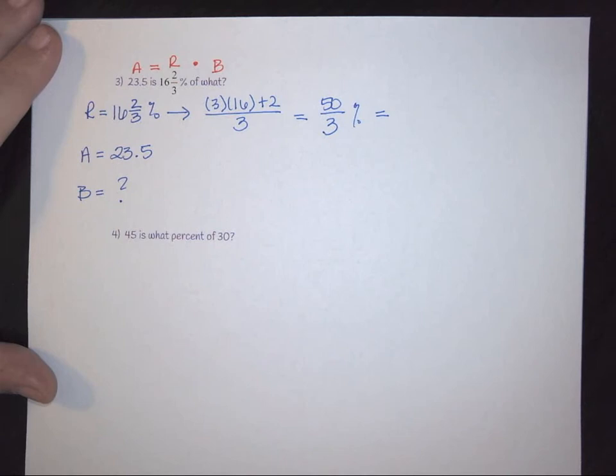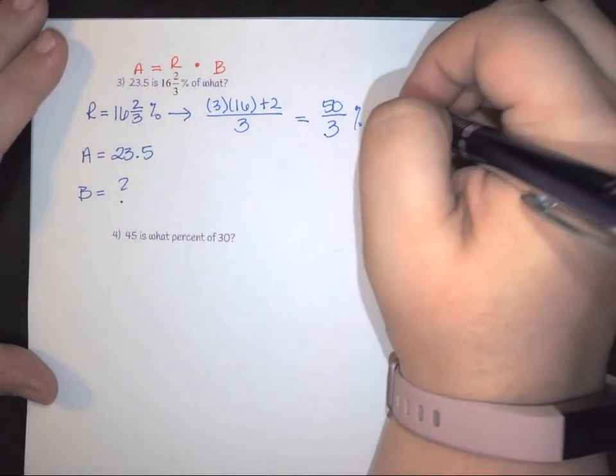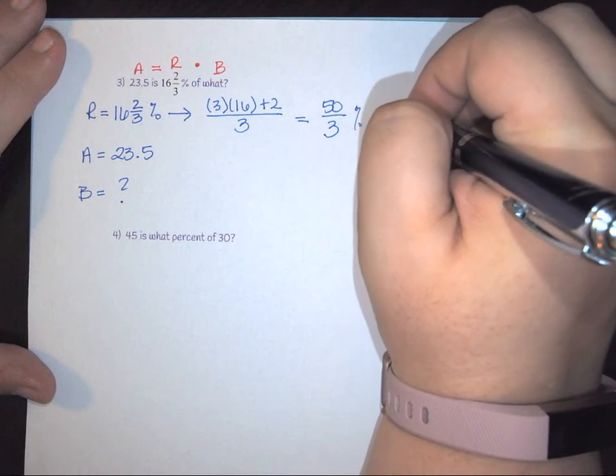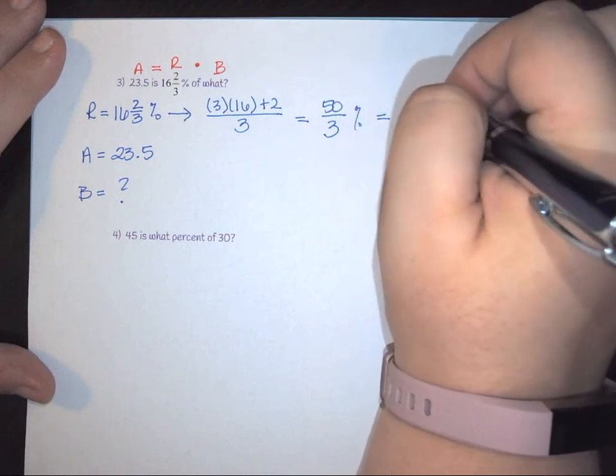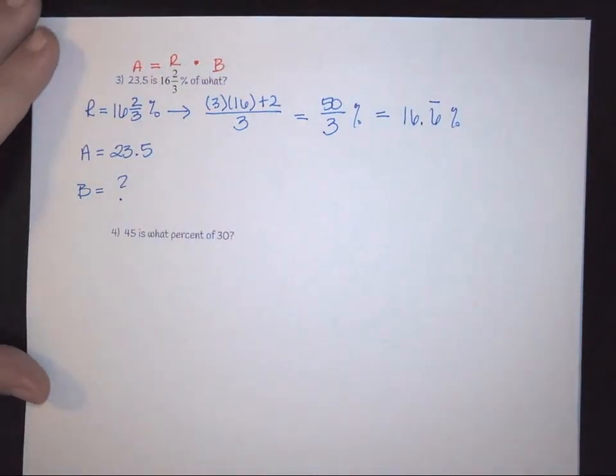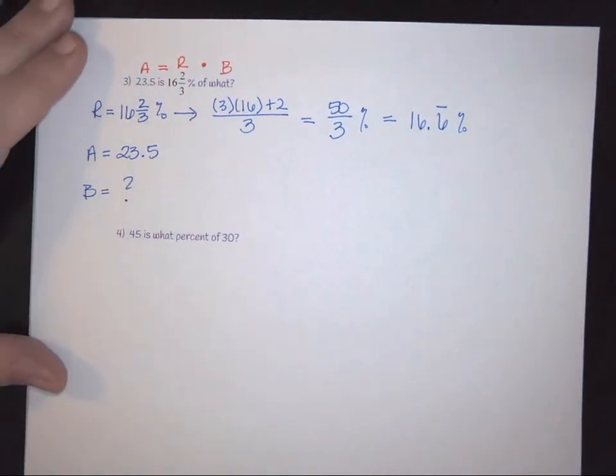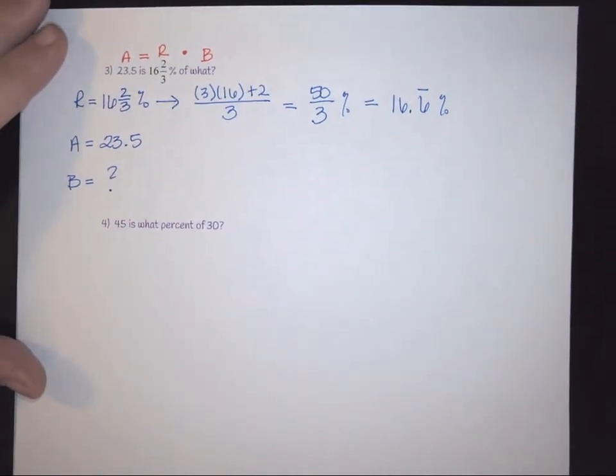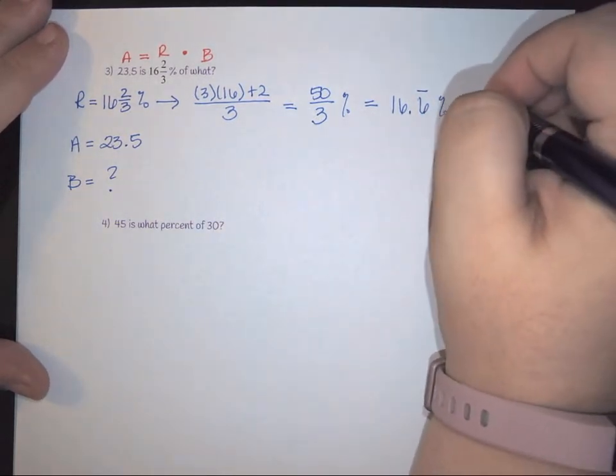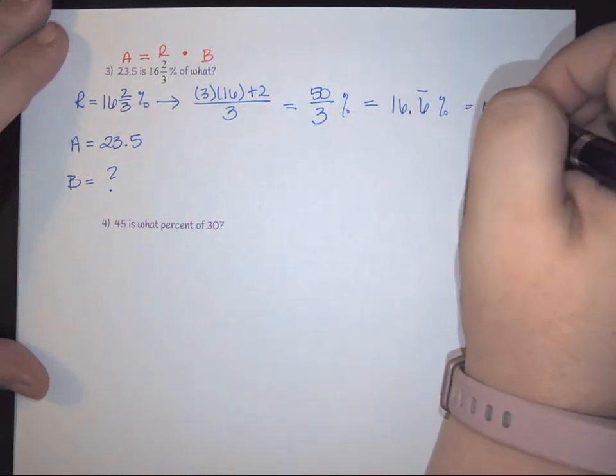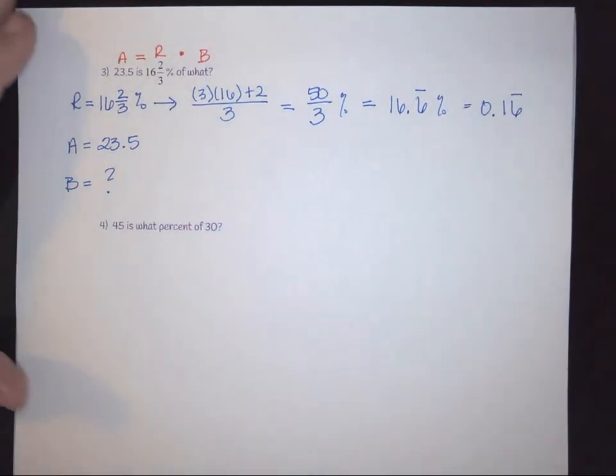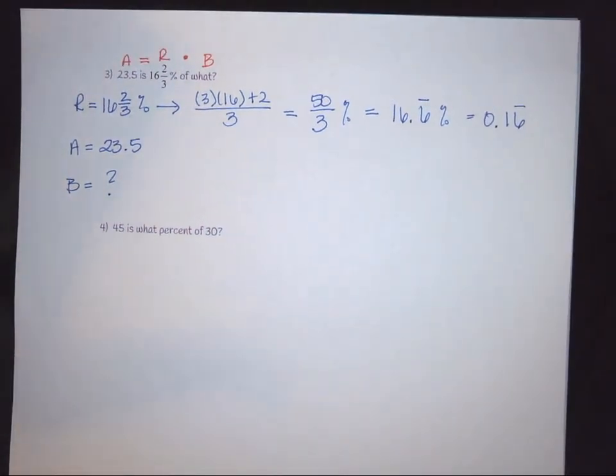So we need to be able to convert that over to its decimal form. So we have 50 over 3, which is the same as 16.6 repeating percent. Again, if you remember to convert to percent or to decimal says we have to divide that by 100. So this is going to give us 0.16 repeating as a decimal. Okay, so percent to decimal is what we did.